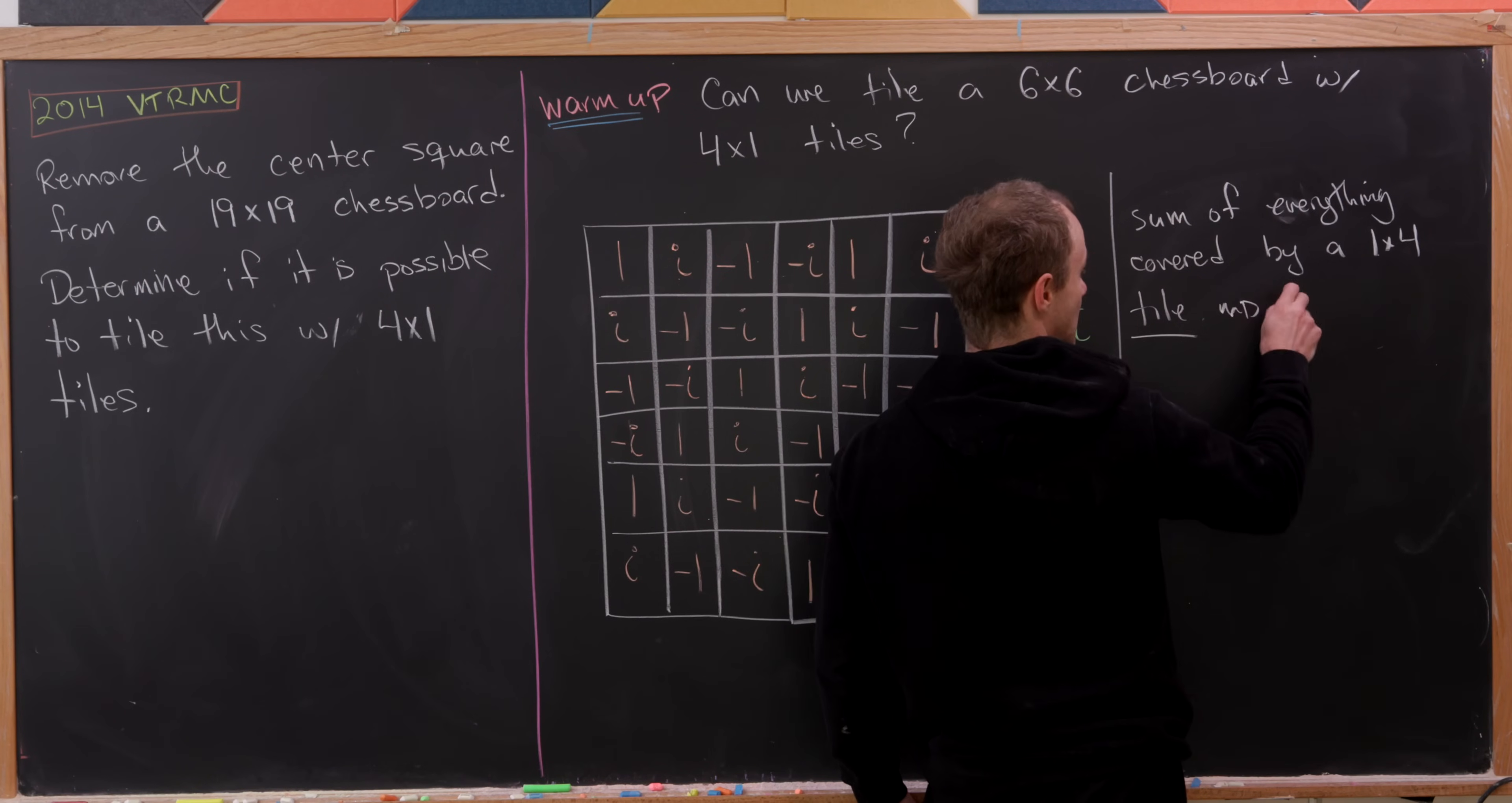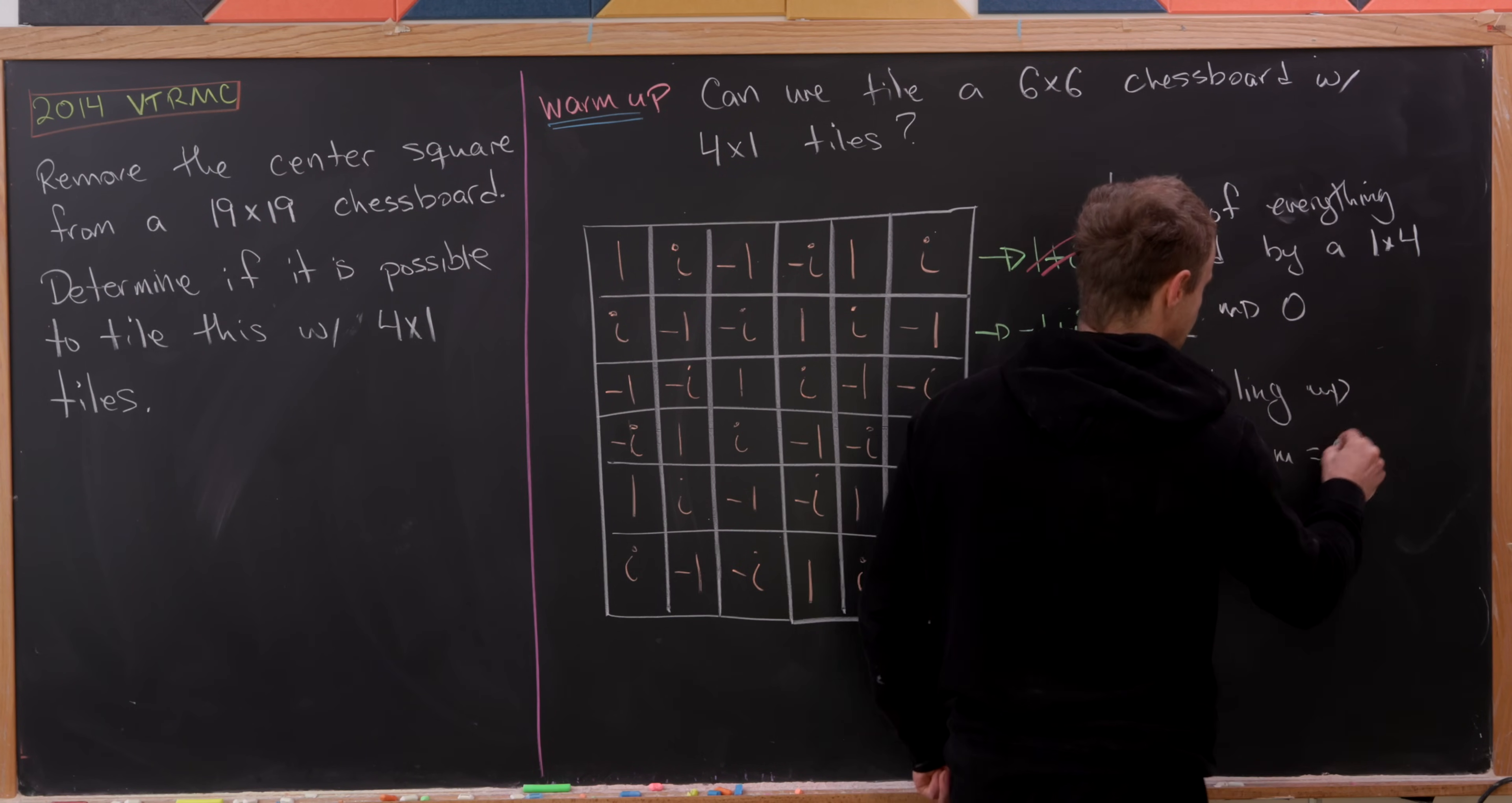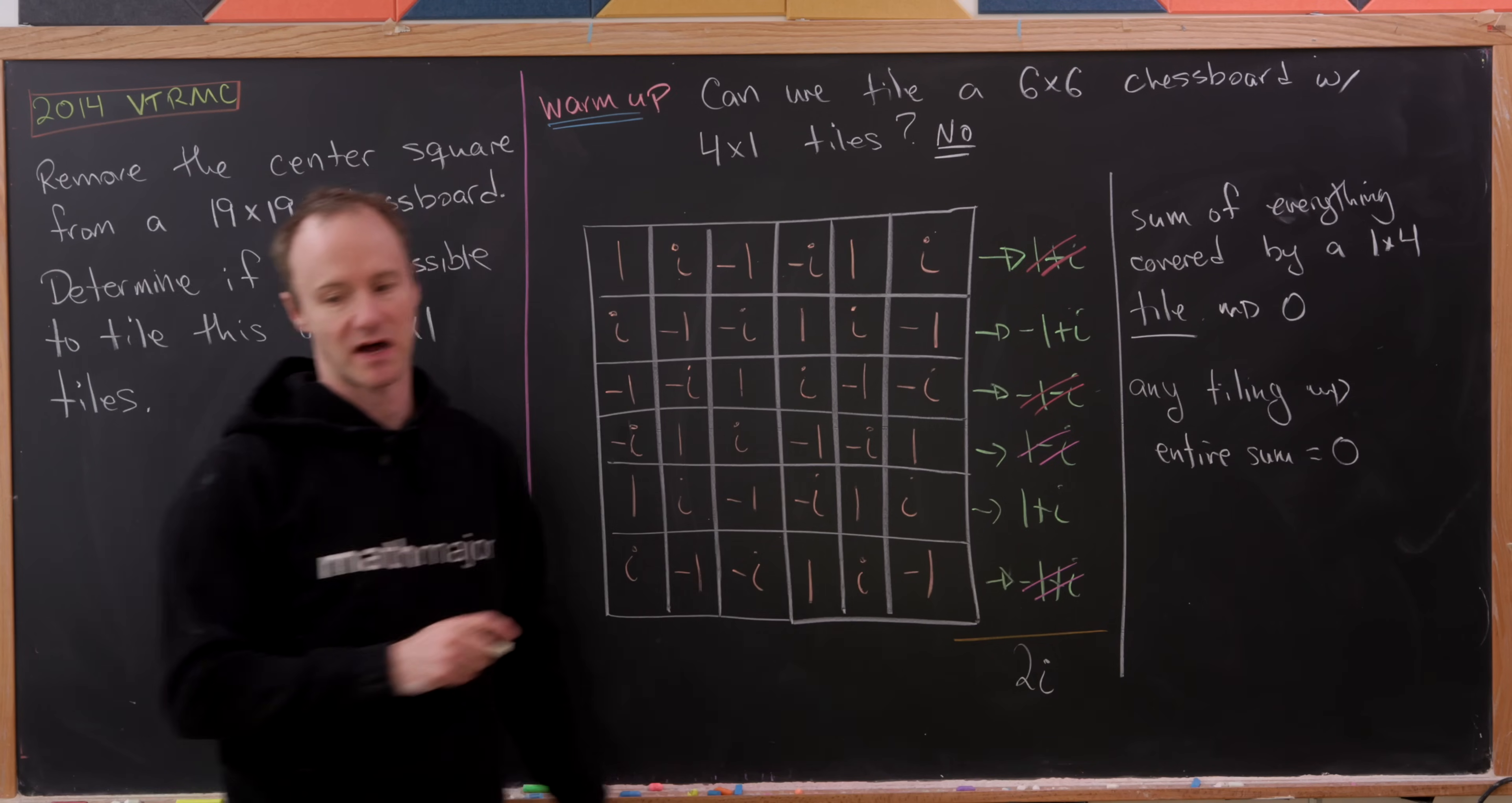These all sum to 0. But then if we had a tiling of this chessboard, that would lend itself towards the entire sum being equal to 0. That's because we would get a sum of 0 under all of the tiles, just add up a bunch of 0s, and you would get 0. But notice that we just calculated this entire sum to be 2i, which is not equal to 0. So that answers this question. No, this is not possible.